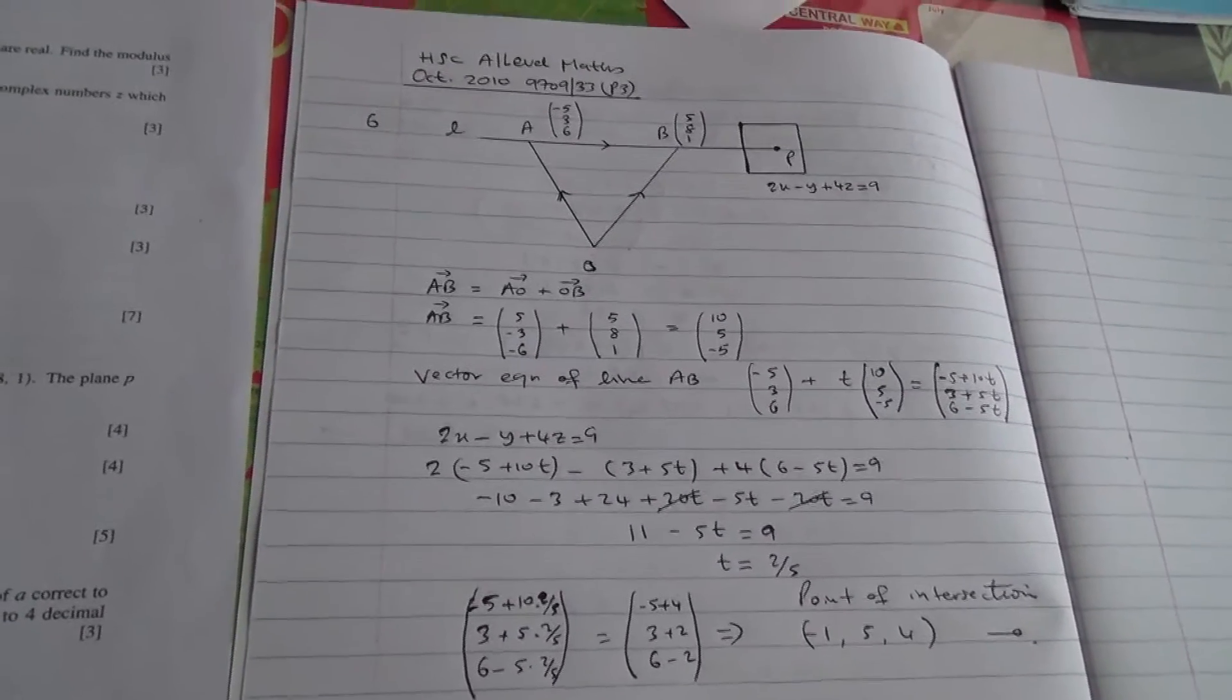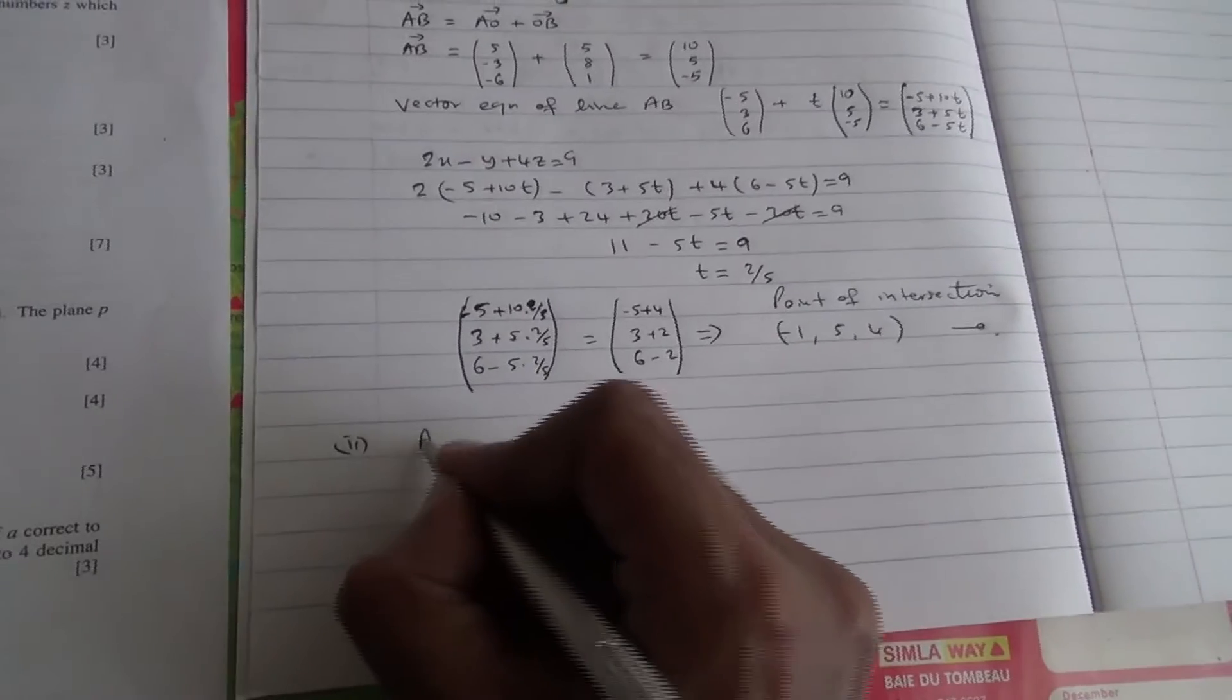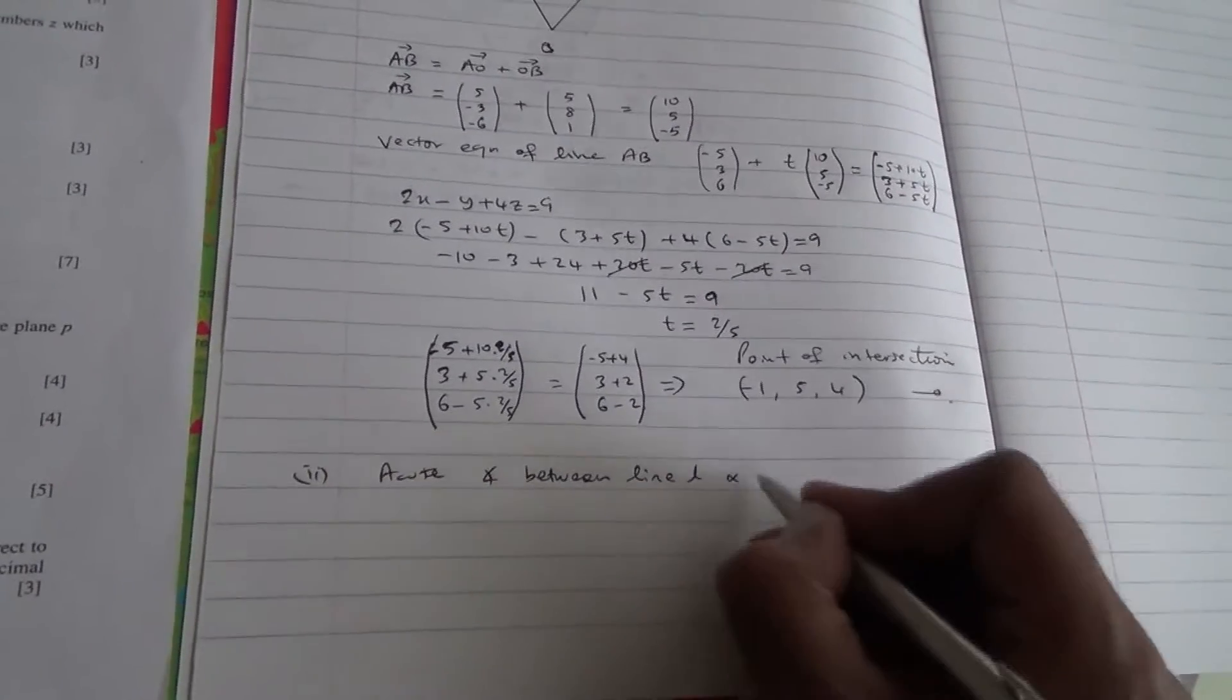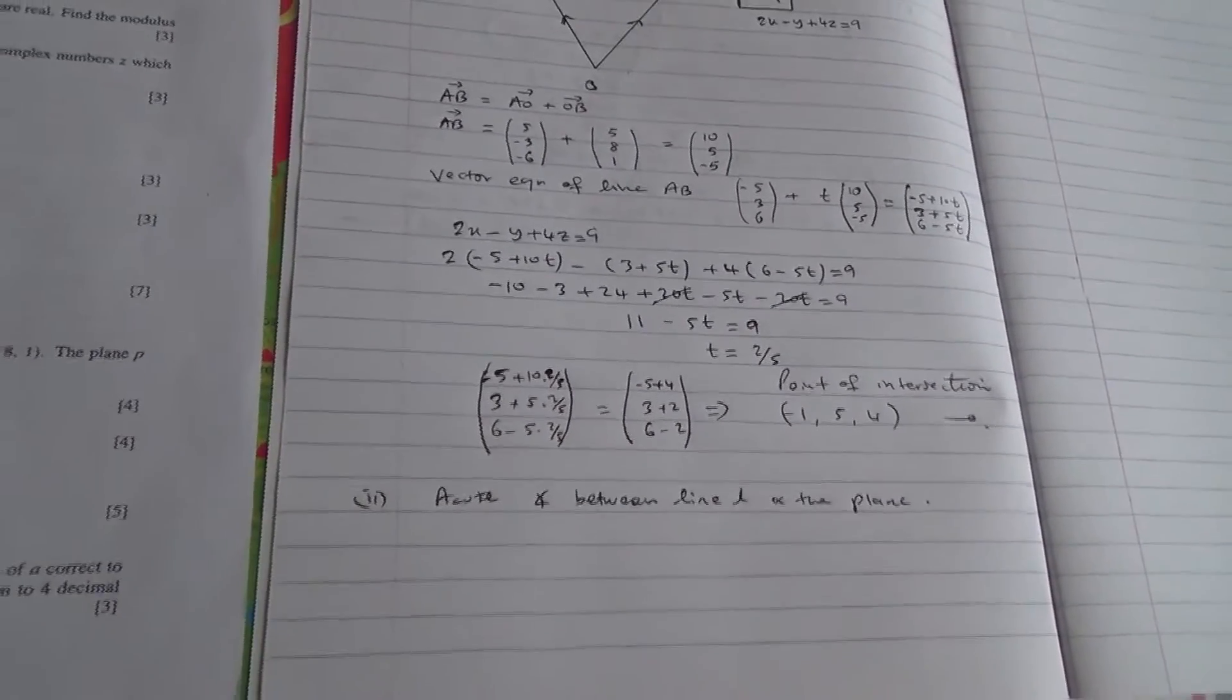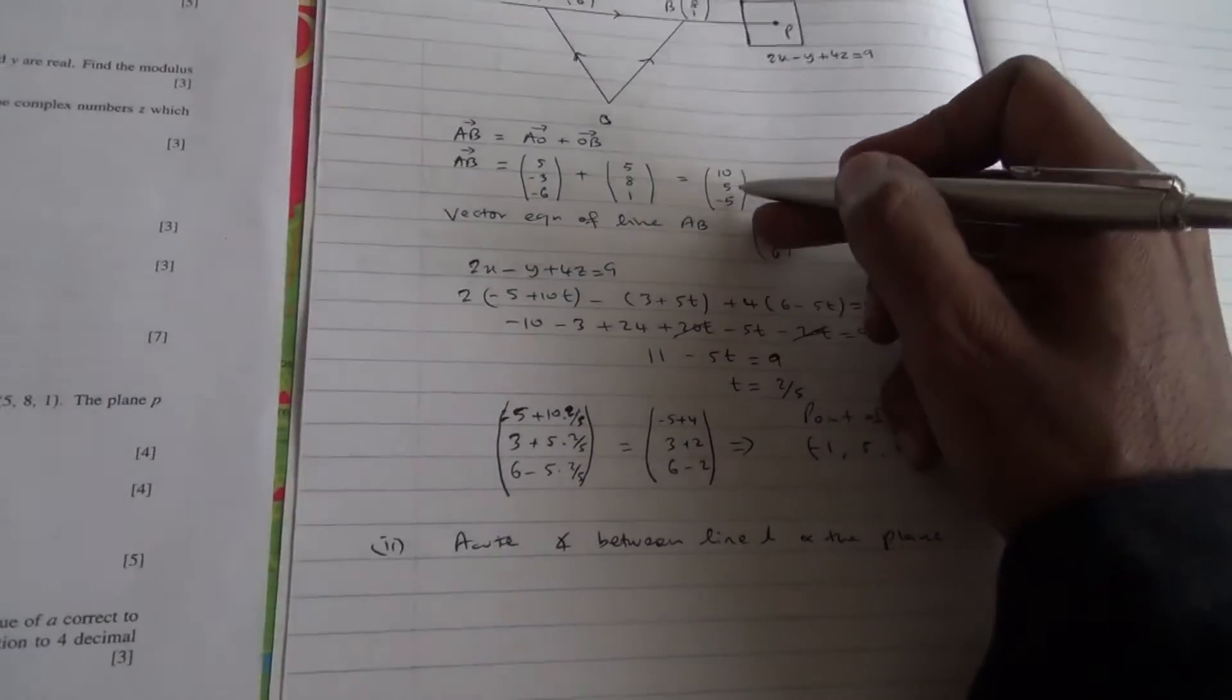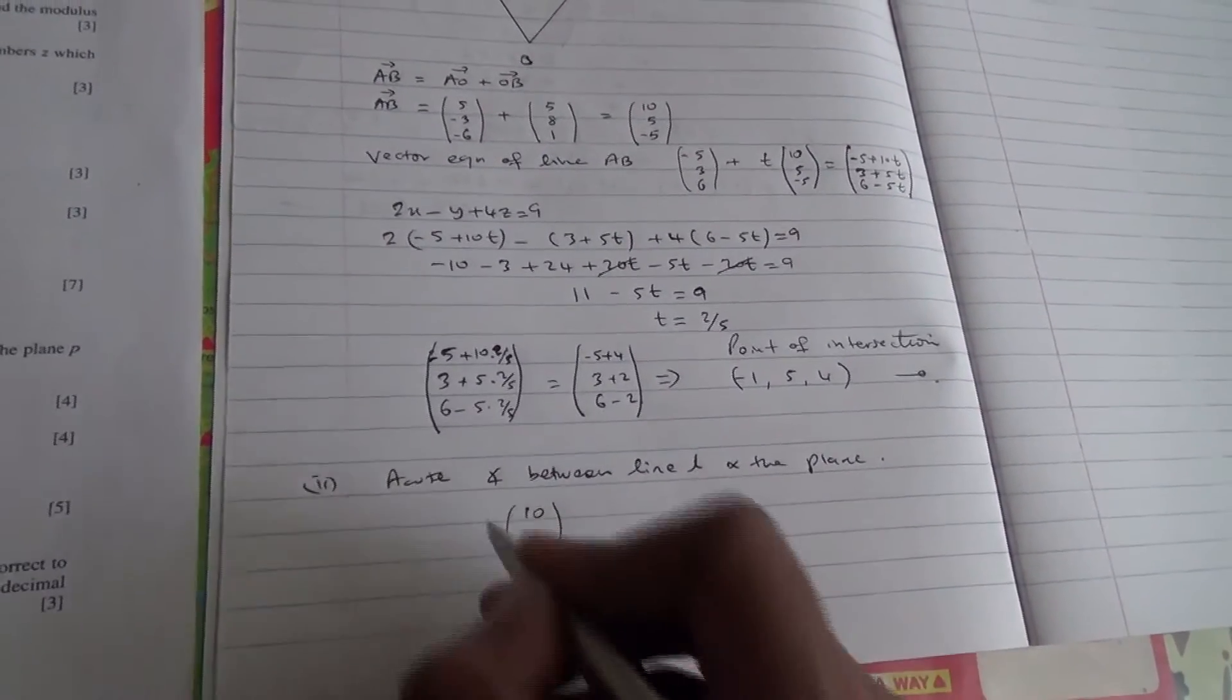This is your answer for the first part. For the second part, we need to find the acute angle between the plane and the line. Okay, for the acute angle between line L and the plane. Remember we have the vector equation of the line.